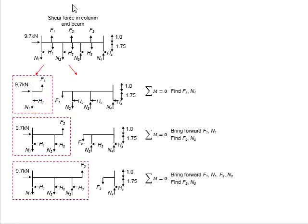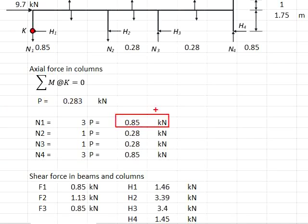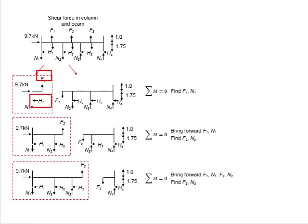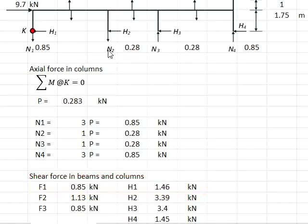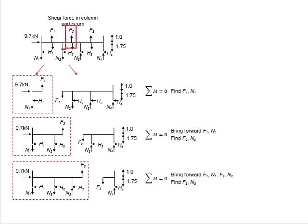From the free body diagram, N1 is already known, equal to 0.85 kN. There will be two unknowns: F1 and H1. Taking the reference point and using the principle of static equilibrium with sigma M equals 0, you are able to obtain H1. Next, taking another reference point and applying sigma M equals 0, you obtain F1. The values of F1 and H1 are then determined. Next, you need to determine F2 and H2 by cutting the frame structure at the next section.